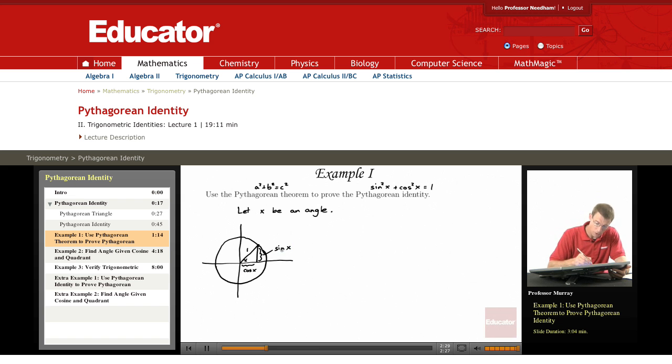Now what we have here is a right triangle, and we're allowed to use the Pythagorean Theorem. We're given that, and we're going to use it to prove the Pythagorean identity.